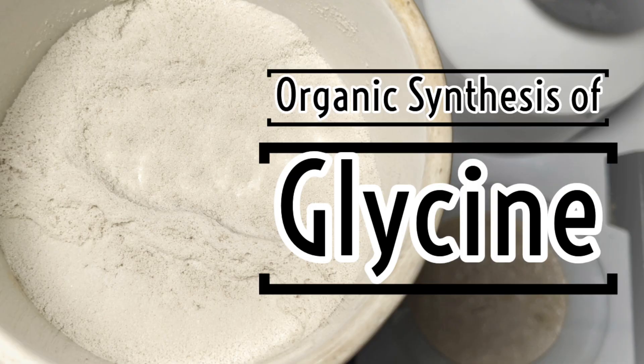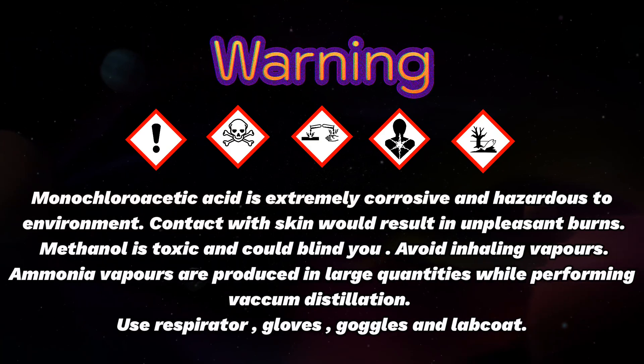Hello friends, in this video we will be synthesizing glycine using monochloroacetic acid and ammonium carbonate. This preparation is adapted from Vogel's book of practical organic chemistry.